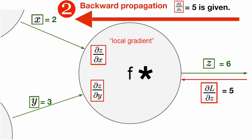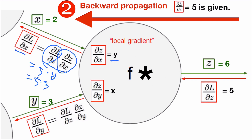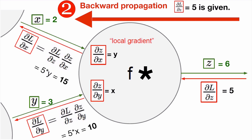For somehow this upstream gradient is given. We want to compute the downstream gradients. The upstream gradient is given as 5, so it's 5 times the local gradient, which is y. And y we know the value: 5 times 3 gives us 15. In the same manner, we can compute the other gradient as well. This is how we apply the forward pass with concrete values, memorize them, and then do backward propagation by applying the chain rule.